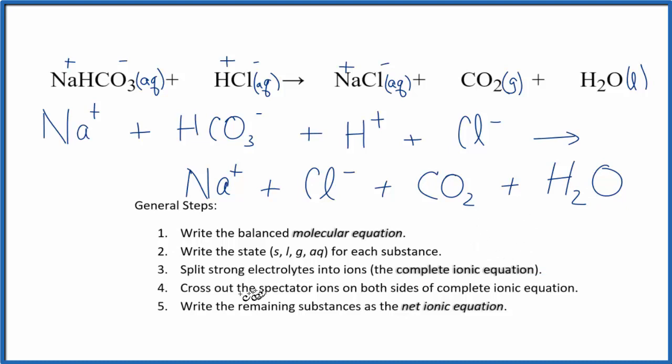Based on this, we can now cross out the spectator ions. The spectator ions, they're ions that appear on both sides of the equation. So we have Na plus here in the reactants, and then in the products, we have Na plus here. We can cross that out. Let's see, here's Cl minus, Cl minus. So we have the chloride ion in the reactants, products, it hasn't changed, cross it out.